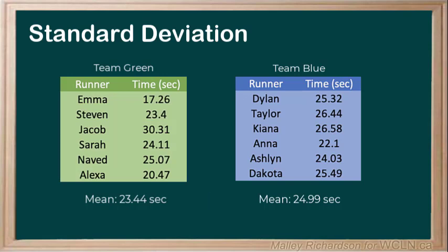However, the blue team argues this is incorrect. And looking at the datasets, we can see that something is off. The blue team seems to have all their times within a small range — their fastest time was 22.1 seconds and their slowest time was 26.44 seconds. But the green team had a larger range of times: their fastest time was 17.26 seconds, but their slowest time was 30.31 seconds. So from these ranges, something seems off, and we need to find a way to get a more accurate picture of the data.